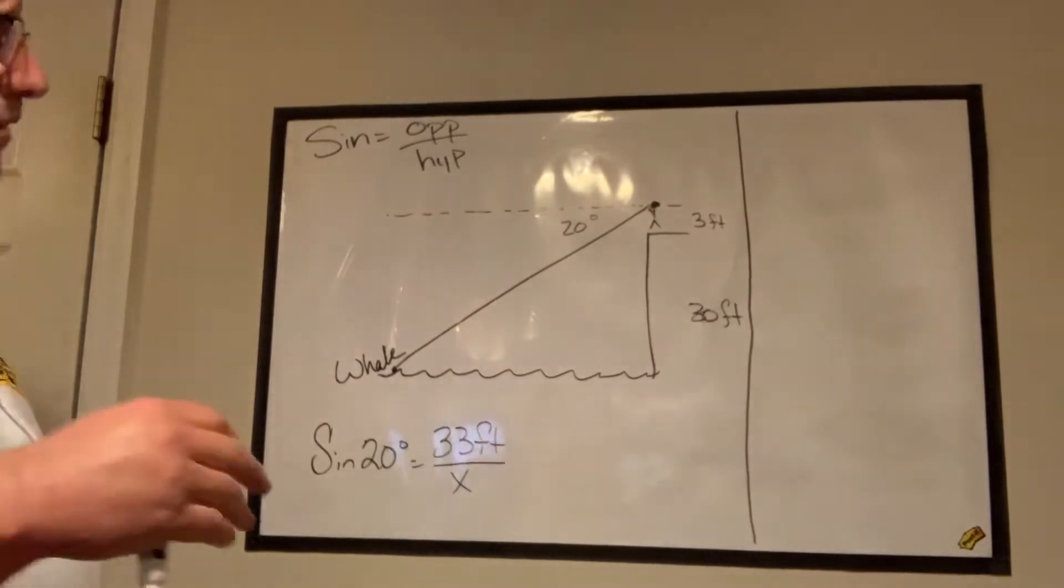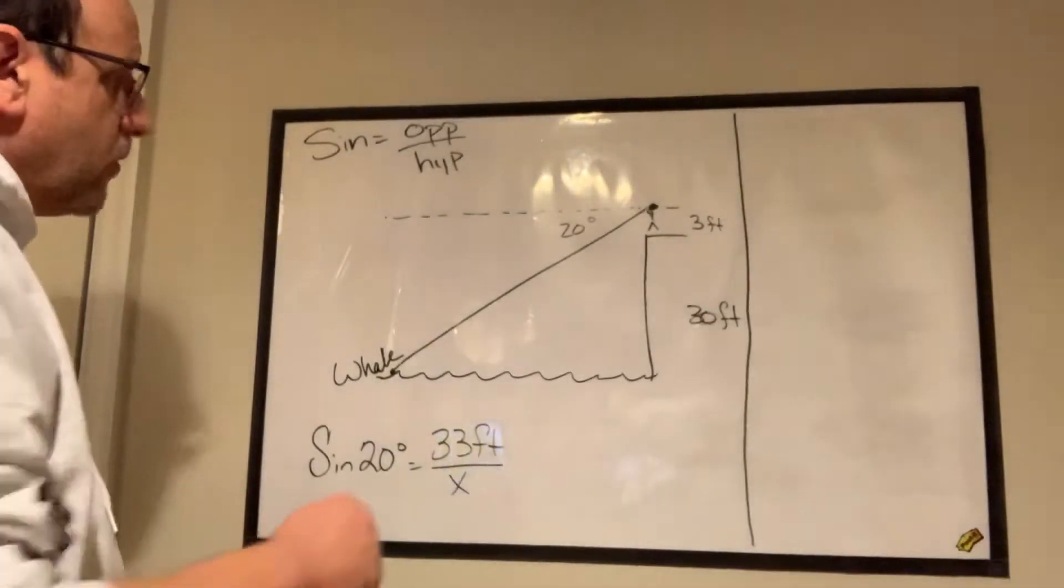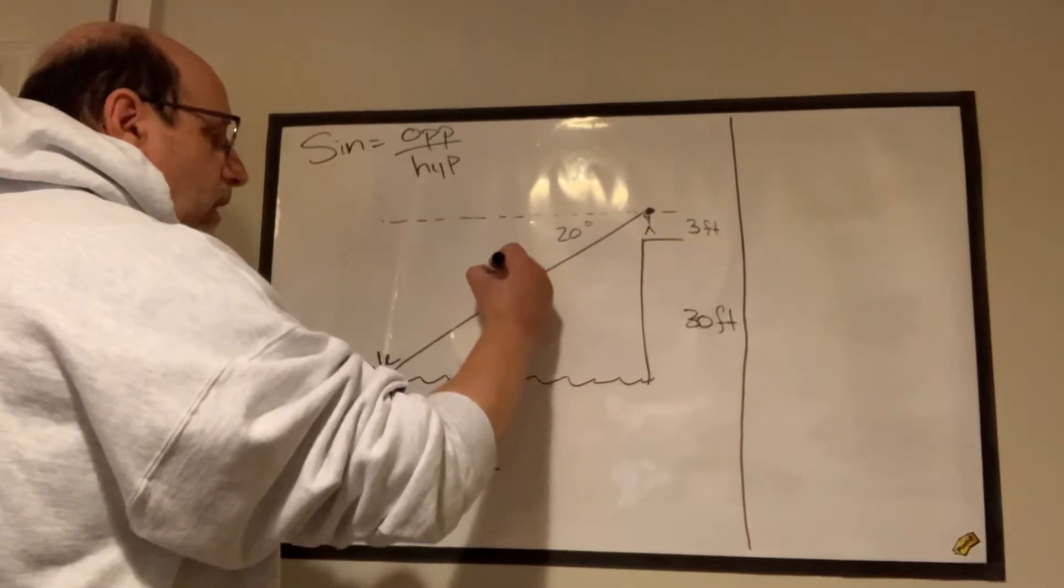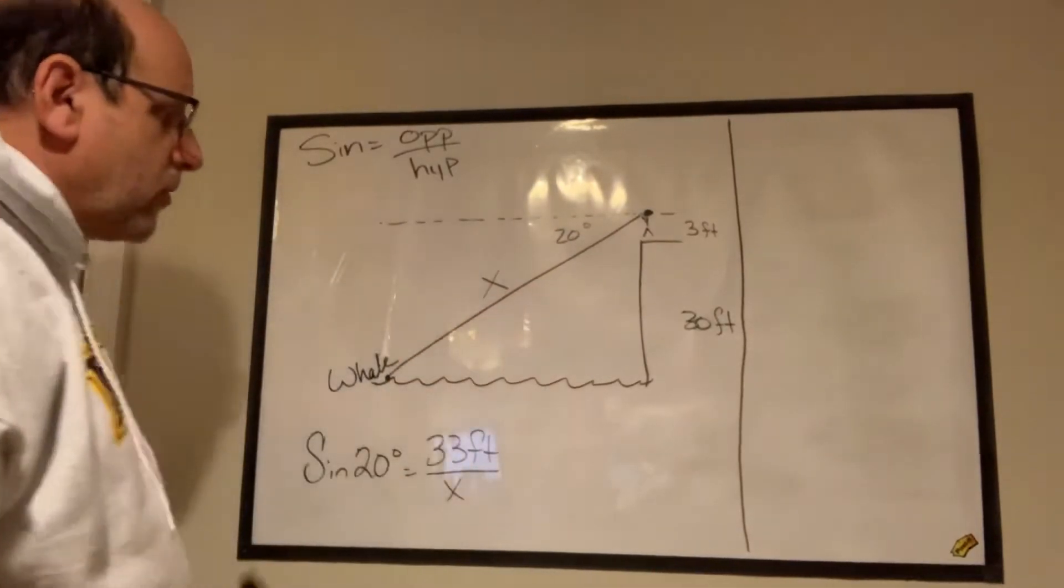It should be very simple. We're looking for a distance. We're looking for this distance, and this distance is our unknown or our X. So I'm going to put X on there.